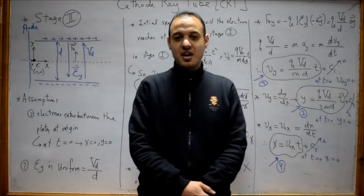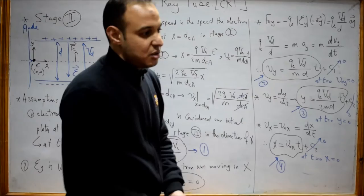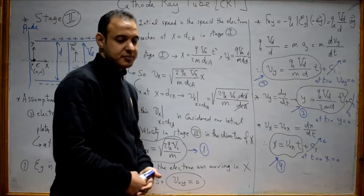Hi, welcome back to our Electronics course. In this lecture, we will analyze the motion of the electron in the second stage of the cathode ray tube. In this stage, the electron will move between two deflection plates.